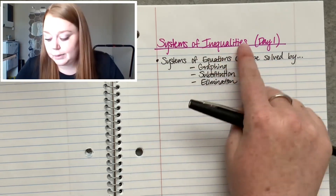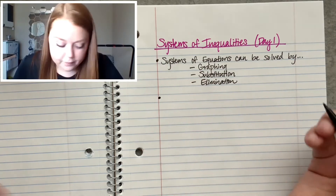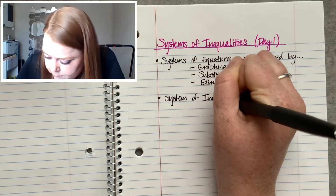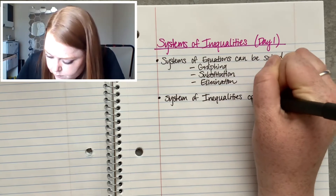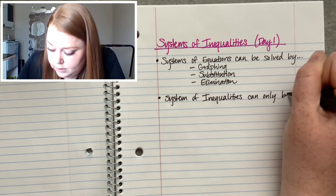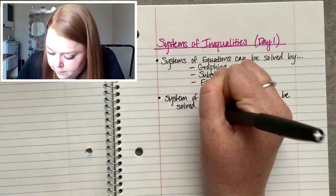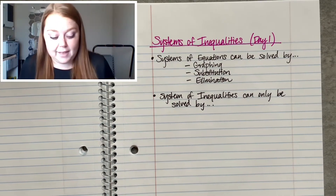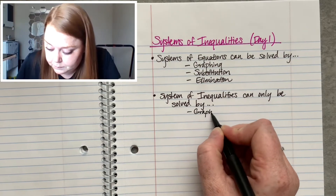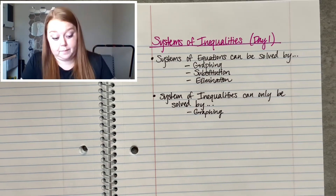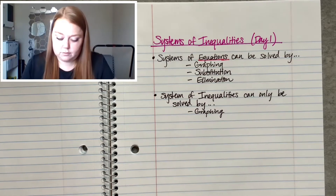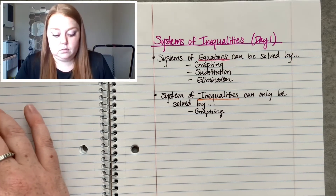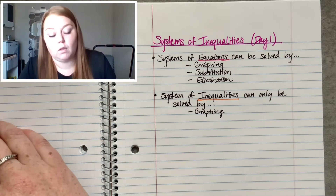But we're not doing equations today — we're doing inequalities. Systems of inequalities can only be solved by one way. There's actually only one way that you can solve a system of inequalities, and that's going to be by graphing. That's the only way. Inequalities just have so many possible answers that you can't list all the answers, so you use a graph to show all the possible answers.